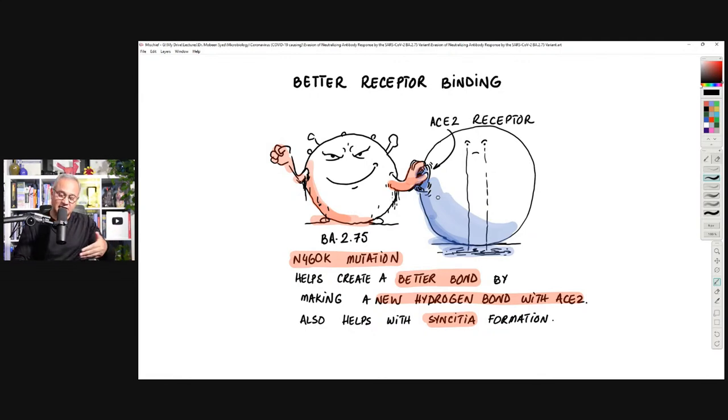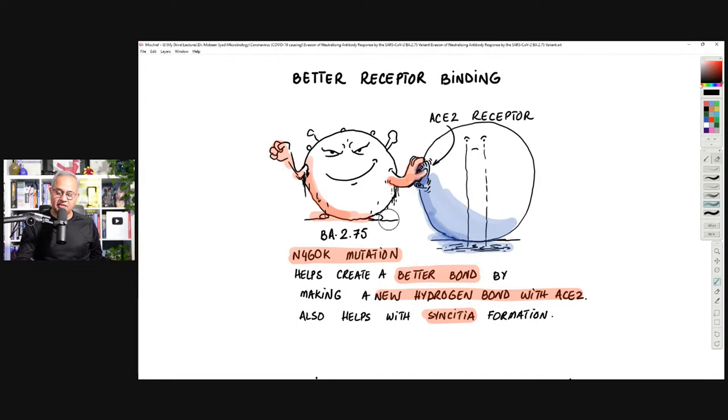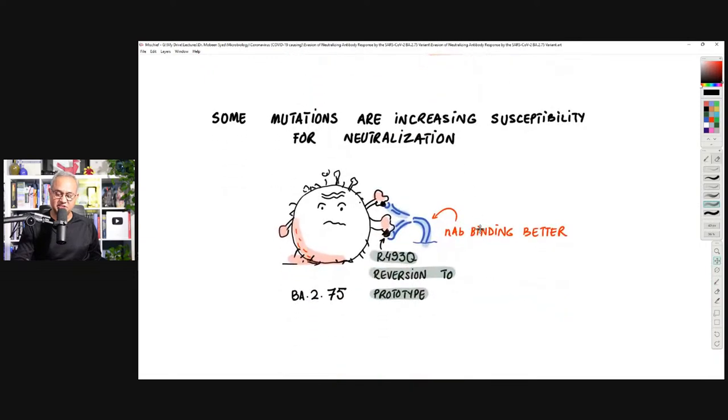Or in simple terms, on the ACE2, there is a region, there is an amino acid called N90 glycan or glycosaminoglycan. And it is able to create, this variant is able to create a new bond there that improves the efficiency of binding. At the same time, you would see a little down. It has actually lost some bonds as well. So imagine if you and I are going to handshake and we both have eight hands and we are able to bind with eight hands. All of a sudden, we have grown a ninth hand as well to bind with each other. But at the same time, three hands have stopped binding with each other. So yes, there is a new bond, but there are lost bonds as well. So once again, overall efficiency is still not a huge leap forward.